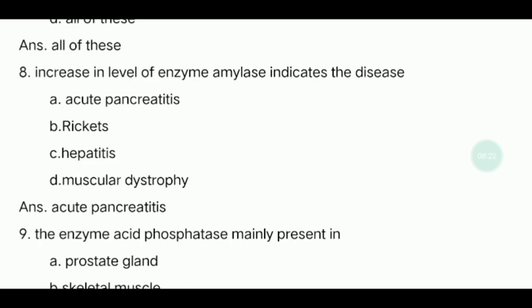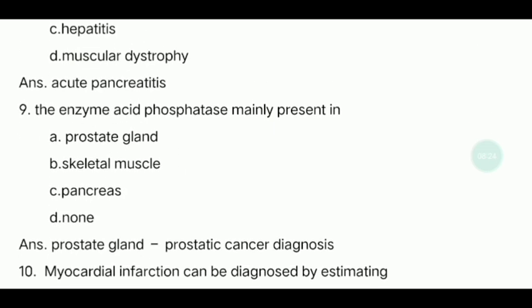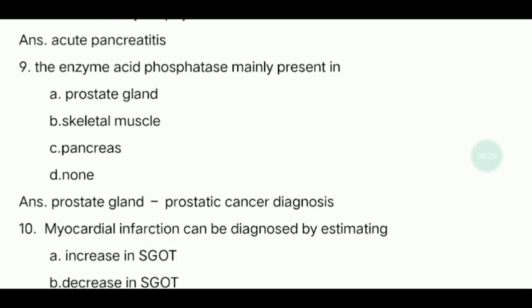Ninth question: The enzyme acid phosphatase is mainly present in which organ? The answer is the prostate gland. Elevated acid phosphatase is used to diagnose prostatic cancer.